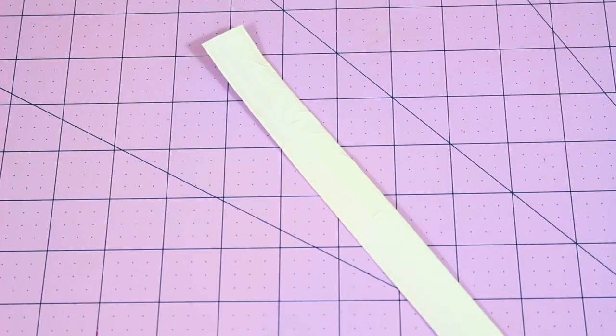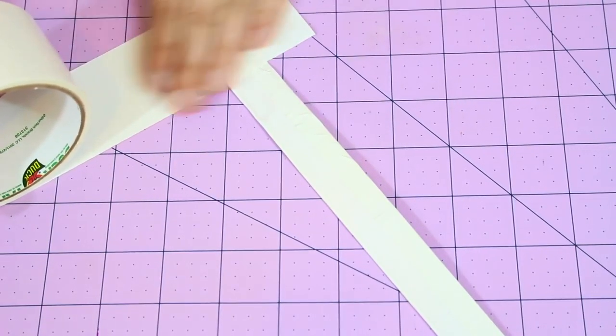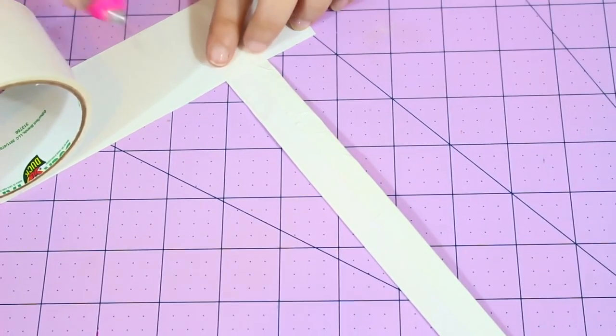I'm flipping it over so the white is facing me, and then I'm putting some duct tape on the ends, not doing any specific measurement.